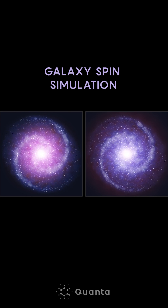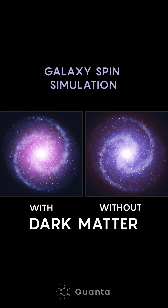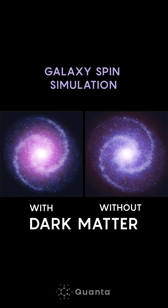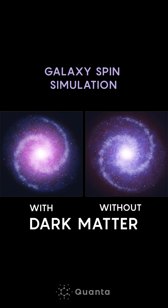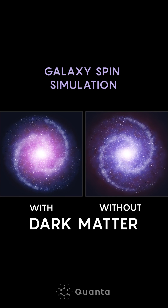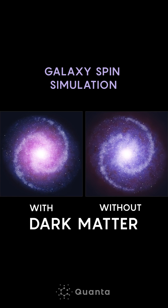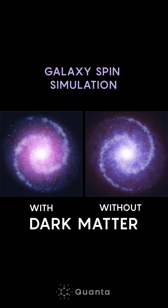In fact, galaxies spin much faster. So people conclude that there must be some hidden component to the mass, which they call dark matter.